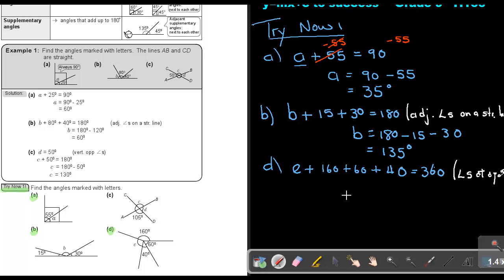So basically, I'm just going to say E is equal to 360 minus 160 minus 60 minus 40. Remember that's 60, and then if I subtract all of it, I'm going to find that the value of E is equal to 100 degrees. And that's my final answer.